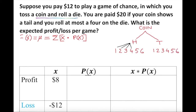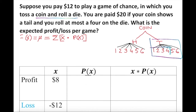Now, reading the condition — your coin shows a tail and you roll at most 4 — we keep our discussion limited to the tail side. On the tail, we are looking for at most 4, so: 1, 2, 3, 4. That gives us 4 out of 12 total outcomes. So 4 out of 12 is the probability of profit.